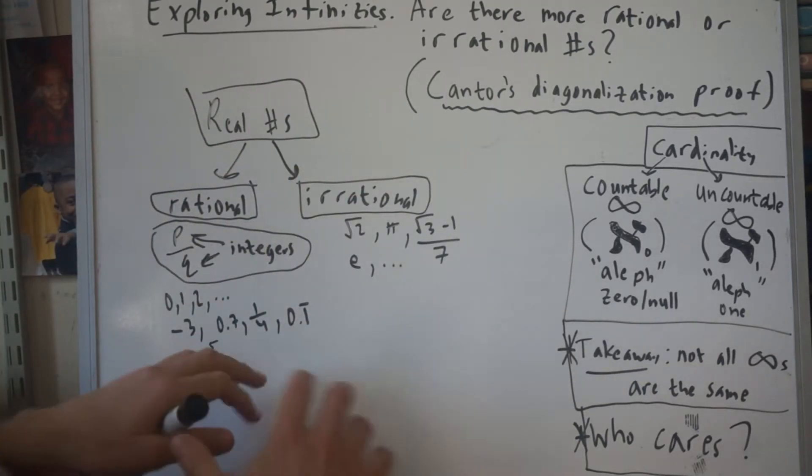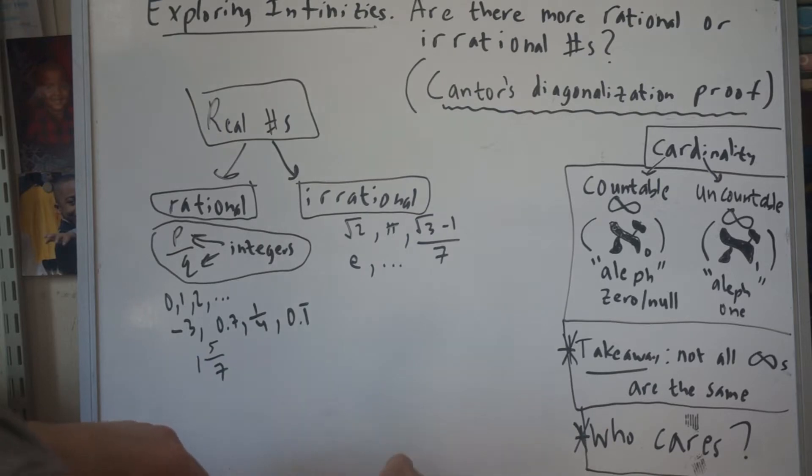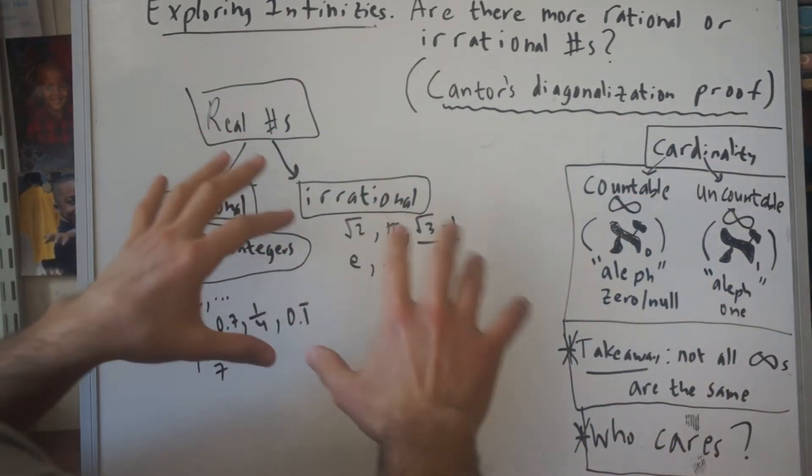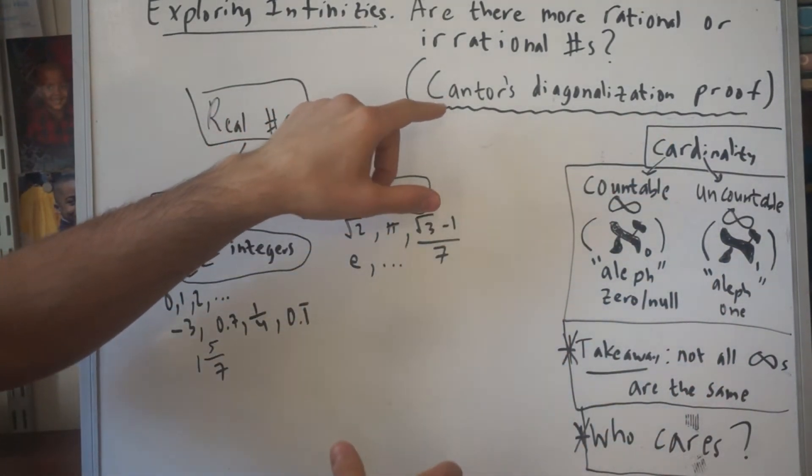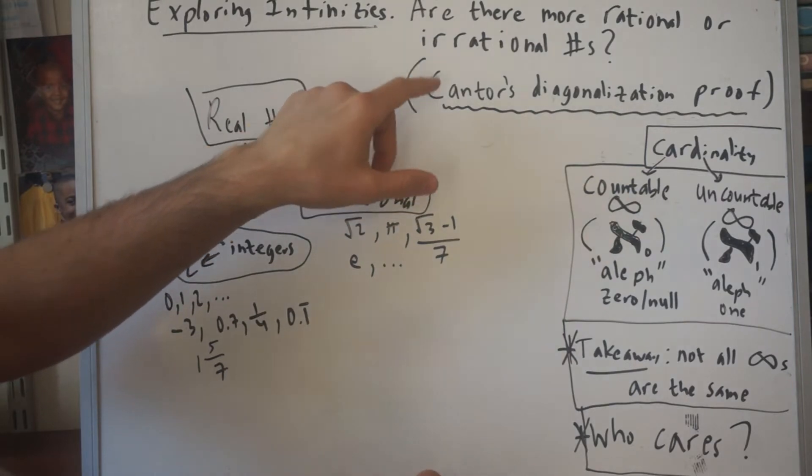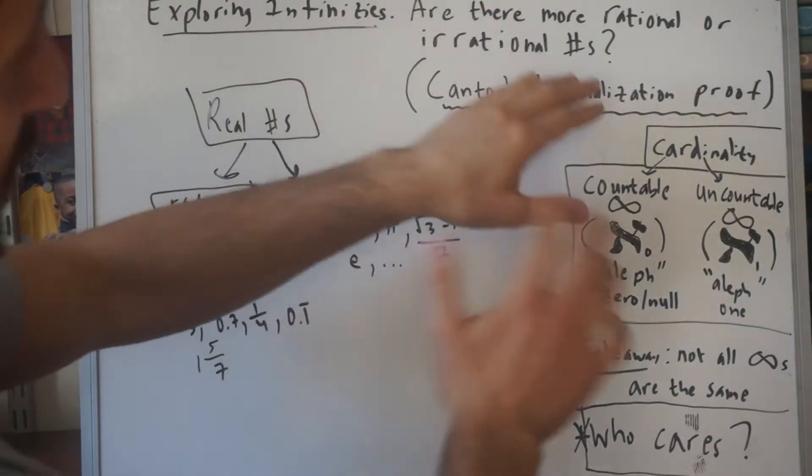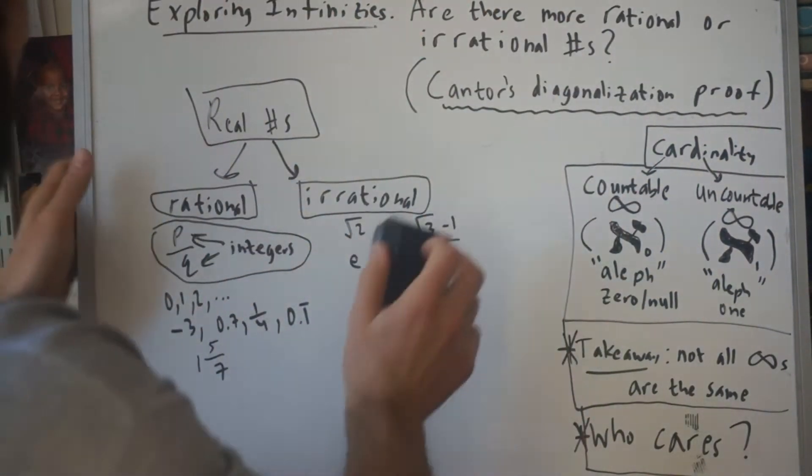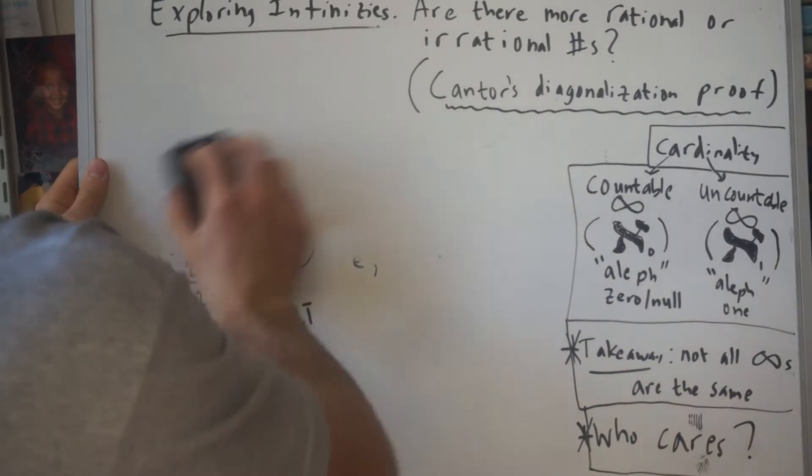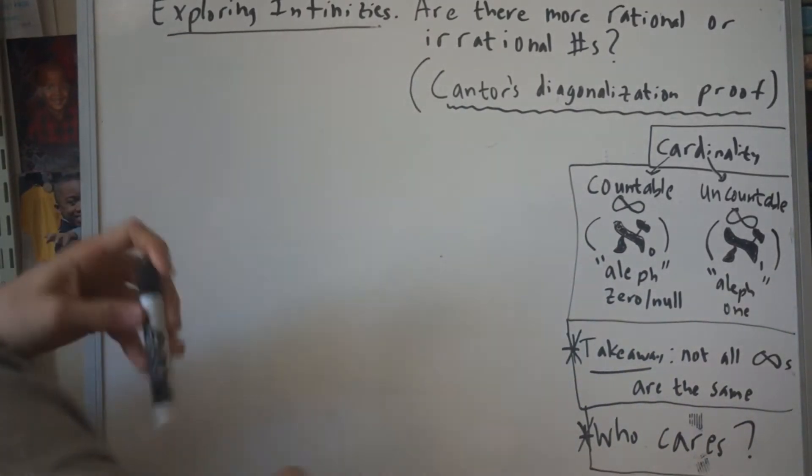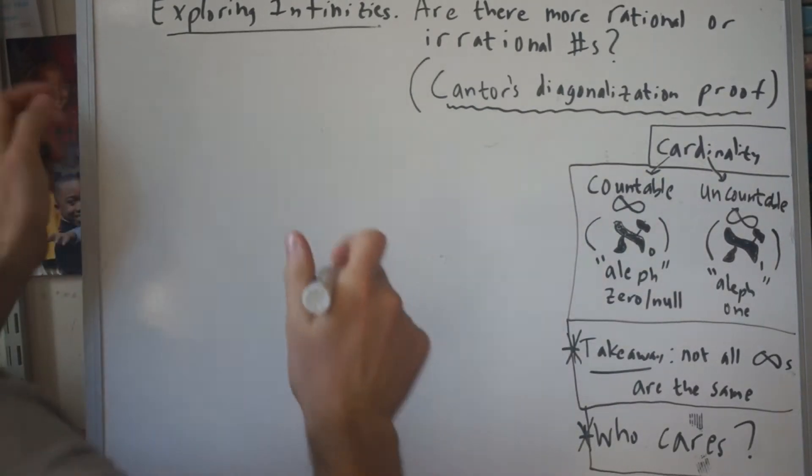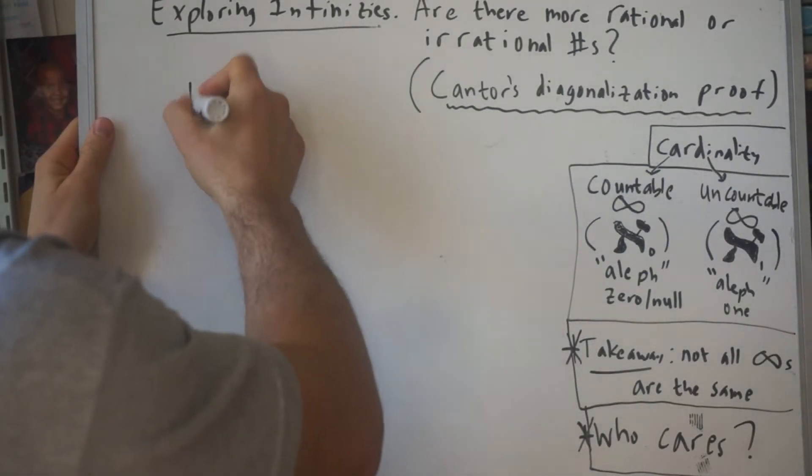So how would we even approach this? What we're going to do in this video is follow Georg Cantor's diagonalization proof. He came up with this proof and we'll see why it has that name. Real numbers can be split into rational and irrational, and let's just focus on the rational for a second.